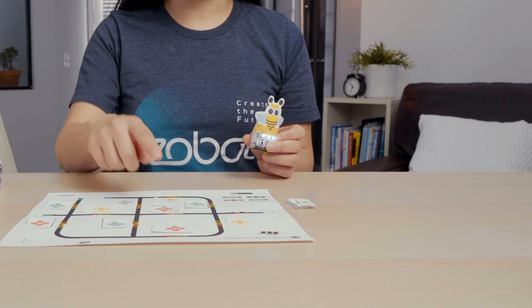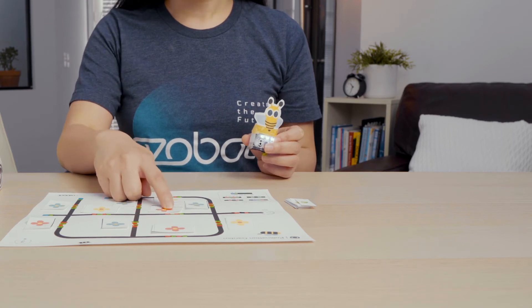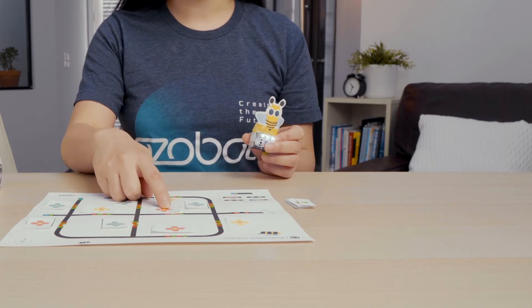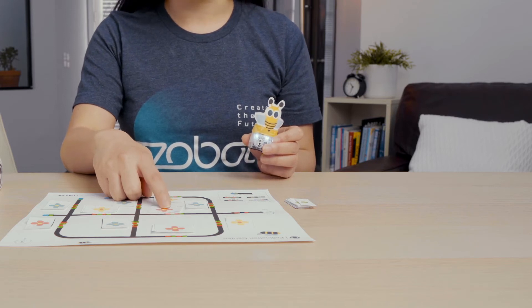First, my pollinator moved to the red flower. I know it moved to this flower because it spun. This is where my pollinator picked up the pollen.